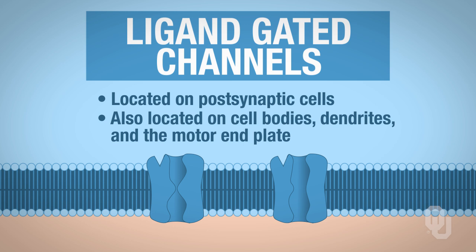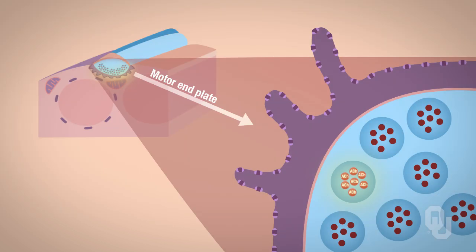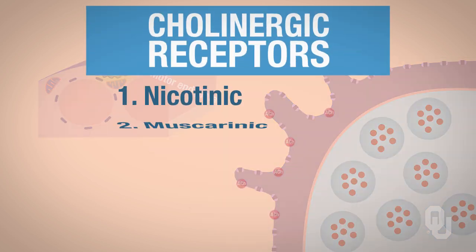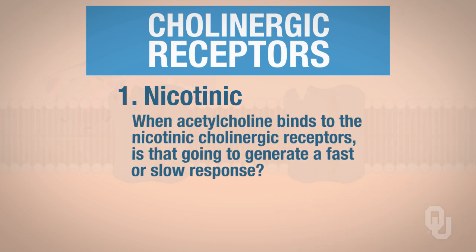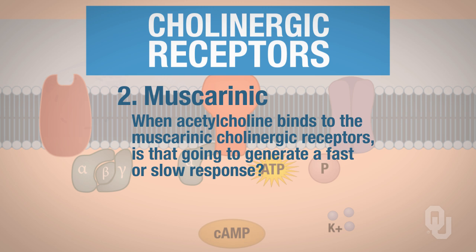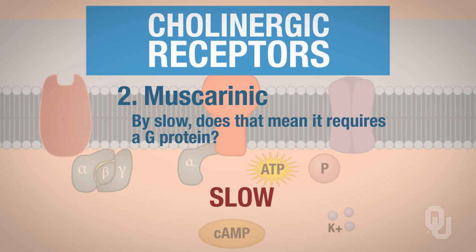Let's focus on the ligand in this neuromuscular junction — acetylcholine. There are two types of cholinergic receptors: nicotinic and muscarinic. When acetylcholine binds to nicotinic cholinergic receptors, it generates a fast response. When acetylcholine binds to muscarinic cholinergic receptors, it generates a slow response — and by slow, that means it requires a G protein. Yes, muscarinic receptors are G protein-coupled.